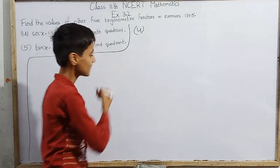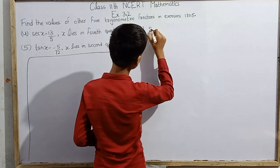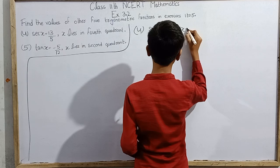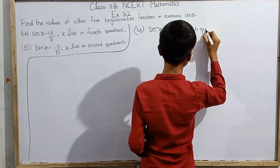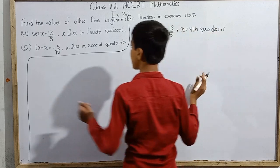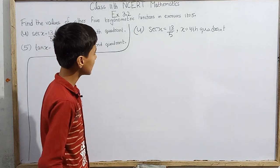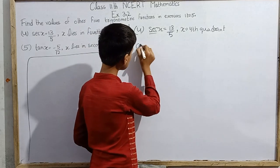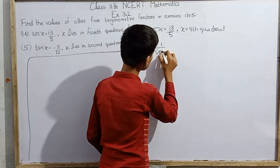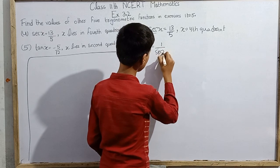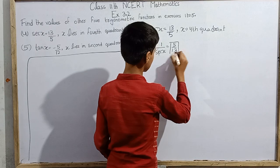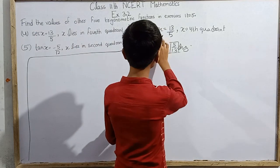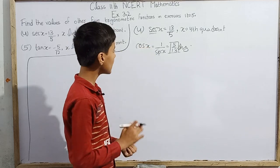Let's start from question 4. Here it is given that sec x equals 13 over 5, and x is in the fourth quadrant. We need to find the rest of the trigonometric functions. Since sec x is given, we can easily find cos x, which is 1 over sec x. So cos x equals 5 over 13.